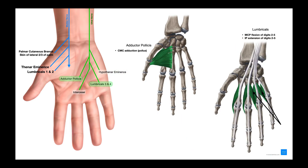The next branch goes to adductor pollicis, which allows adduction of the thumb at the carpometacarpal joint. Then there's another branch to the third and fourth lumbricals — the medial lumbricals. Remember that the lumbricals have split innervation: lumbricals one and two were innervated by the median nerve, while lumbricals three and four are innervated by the ulnar nerve. Recall the lumbricals allow flexion of digits two through five at the metacarpophalangeal joints and extension of the same digits at the interphalangeal joints.